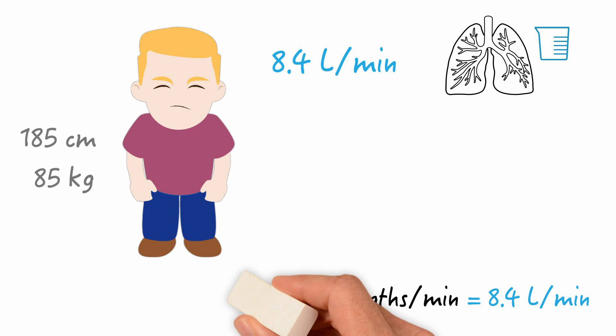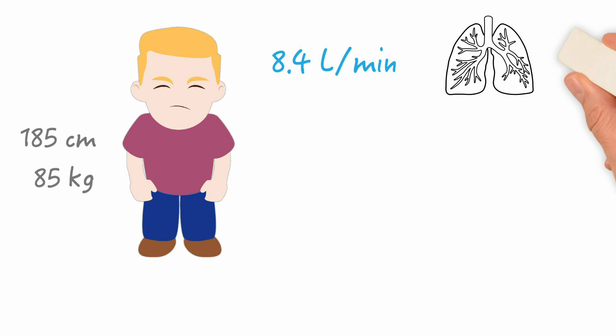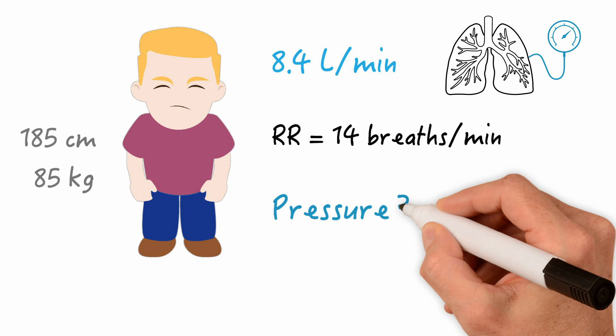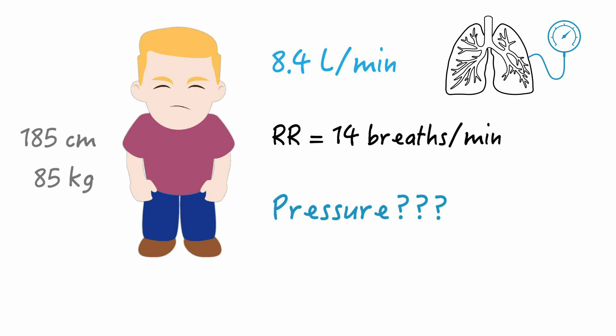Let's use the same patient with the same minute ventilation requirement of 8.4 liters per minute. But now, we'll use pressure control ventilation. And the respiratory rate will still be set to 14. So here's the question. With how much pressure should you inflate the lung?